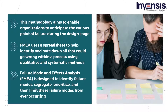FMEA also helps us know the possible causes of failures and detects failure before its occurrence. These characteristics help industries take quick and decisive actions that help mitigate failure while creating a reliable and quality product or process. Failure modes are the different ways in which a process or product can fail. Effects are failures that can lead to defects, waste, or unsafe outcomes for the end customer. Thus, FMEA is designed to identify failure modes, segregate, prioritize, and then limit these failure modes from ever occurring.